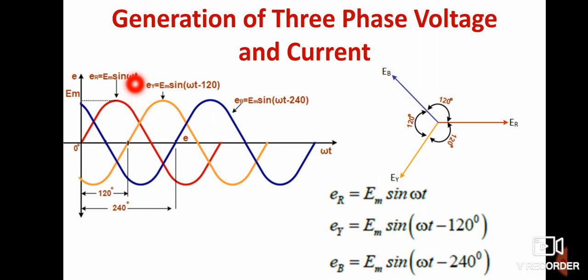The phase angles are 0, 120, and 240 degrees. The phase angle difference between these is 120 degrees. You can represent this in a phasor diagram with ER, EY, and EB as the maximum voltages. The angle between ER and EY is 120 degrees, between EY and EB is 120 degrees, and between EB and ER is 120 degrees.